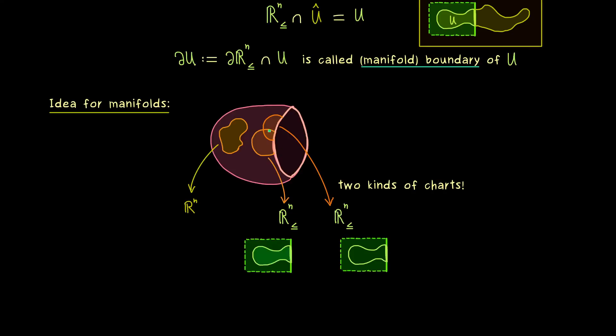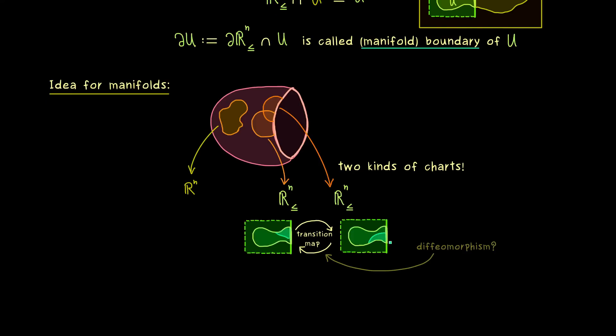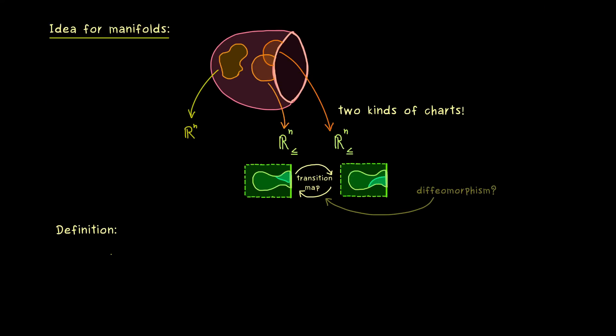And as you might remember, this simply means that we have to look at the intersection here on the lower level and then we want to have a diffeomorphism. Therefore we have to define diffeomorphisms for the half space as well. Of course this is not a big problem, but we have to extend our original definition of a diffeomorphism. So in particular we just have to extend the notion of differentiability to the boundary points as well. And this is kind of easy if we just extend the half space to the whole space again.